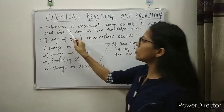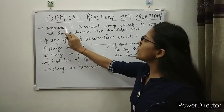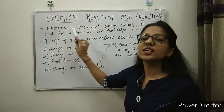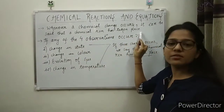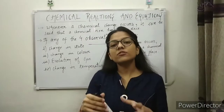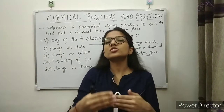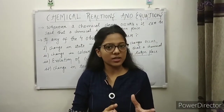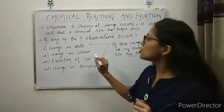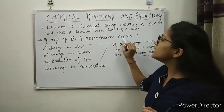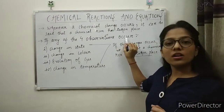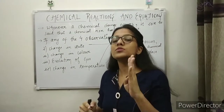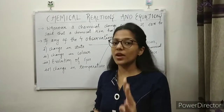I have written on the board that whenever a chemical change occurs, it can be said that a chemical reaction has taken place. So whenever there is a chemical change occurring, a chemical reaction is said to be happening at that particular time. For a chemical reaction or a chemical change to occur, we need to observe four observations very carefully.